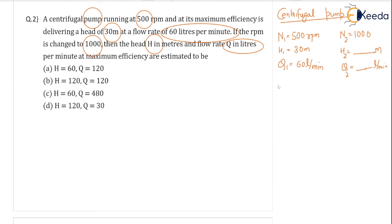So we are using the unit quantities for the ratio, N1 by root h1 equal to N2 by root h2. From this calculation, the value of h2 is coming out to be 120 meters.